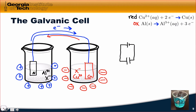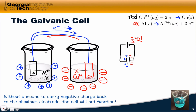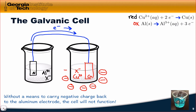It's an open circuit. On one side we're getting a buildup of positive charge, and on the other side a buildup of negative charge — just like a capacitor. This is one way to store electrical energy, but we're not going to get any current flowing since it's an open circuit. What we need is a way to close the loop. Without a means to carry negative charge back — in the form of something that's not electrons via the wire — to the aluminum electrode, the cell won't function. We need some means to funnel charge, not in the form of electrons, but in the form of ions from one beaker to another.